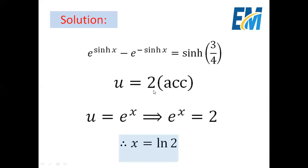So u = 2, but u = e^x. Therefore e^x = 2. Applying the natural logarithm to both sides, we get x = ln(2). Therefore, the solution of this equation is ln(2).